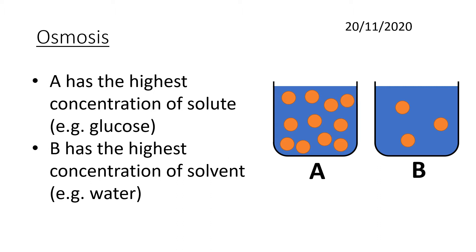Whereas in B, the highest concentration would be the solvent, which is the liquid that the solute is dissolved into. In this case it would be water, but it can be other substances as well. So that's how they're both correct, because they're talking about different substances.